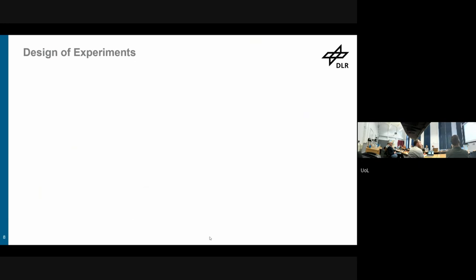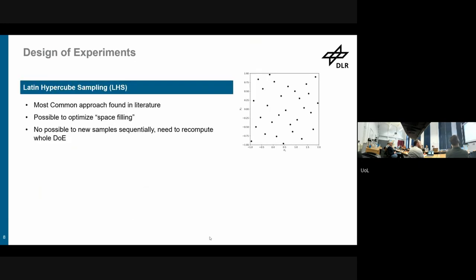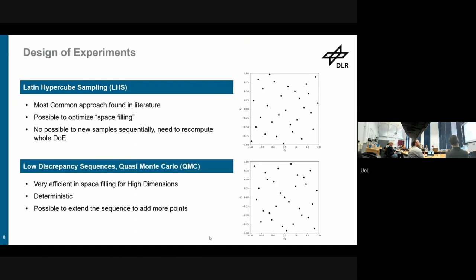So instead you would probably do something like a Latin hypercube sampling. It's arguably the most common approach in literature. The idea is that you're space-filling. And there is a drawback: you're not able to add new samples sequentially. So if you design a Latin hypercube sampling for let's say 50 points and then you realize 60 would have been great, you cannot reuse your initial 50 and just add 10 on top of it, which every now and then is a drawback, especially if you have very expensive function evaluations.